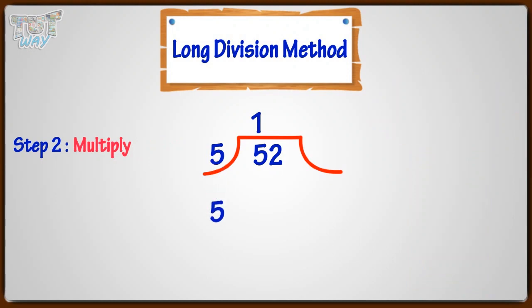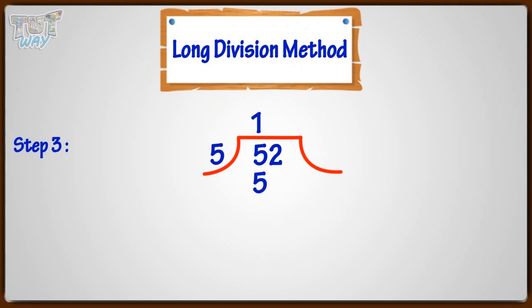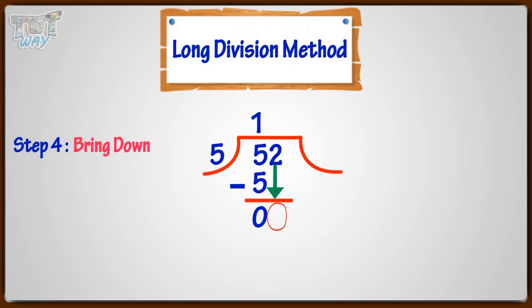Multiply 5 with 1 and write the multiple below. The third step is subtract. Subtract and write the difference below. Now, the fourth step is bring down. Make an arrow and bring down the next number in the dividend. Now again follow the steps. The first step: find the number — that is, how many times the divisor can go into 2.